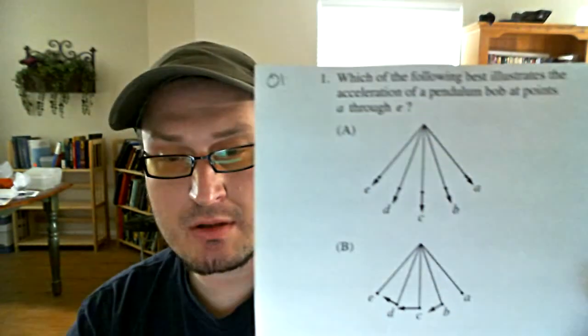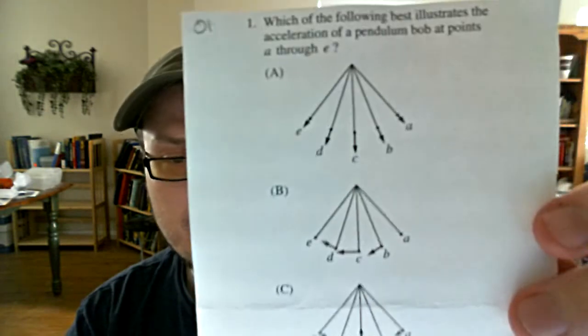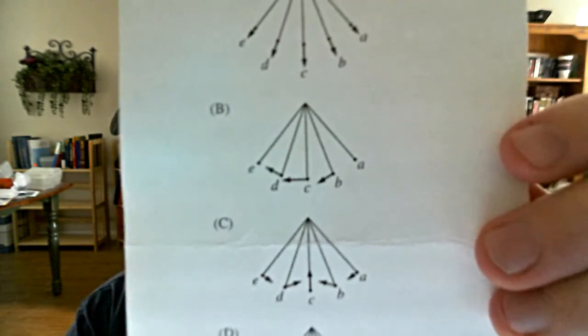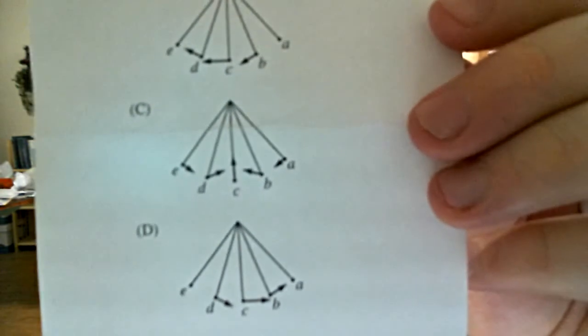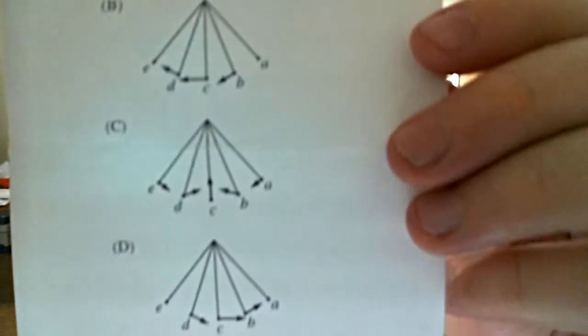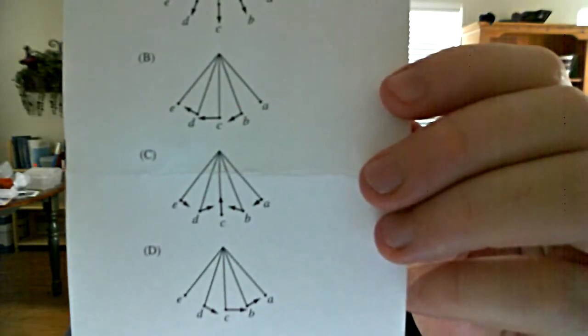Going back and looking at this in a little more detail: the answers are interesting and designed to trip you up. It's good to recognize answers B and D for what they are, to help you eliminate them. B and D could represent fairly well the velocity, which is also a vector. That could represent the velocity of the pendulum going back and forth — the velocity goes to zero as the pendulum swings out to the sides, the bob stops for a microsecond, then swoops back down with its highest velocity at the bottom.